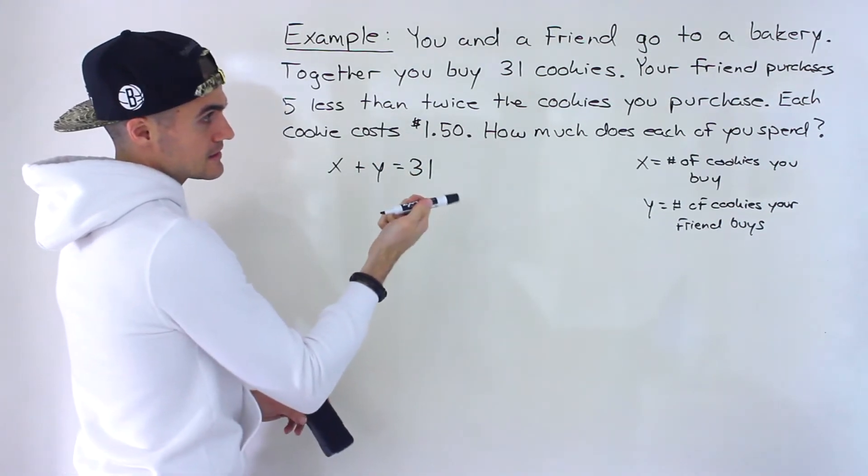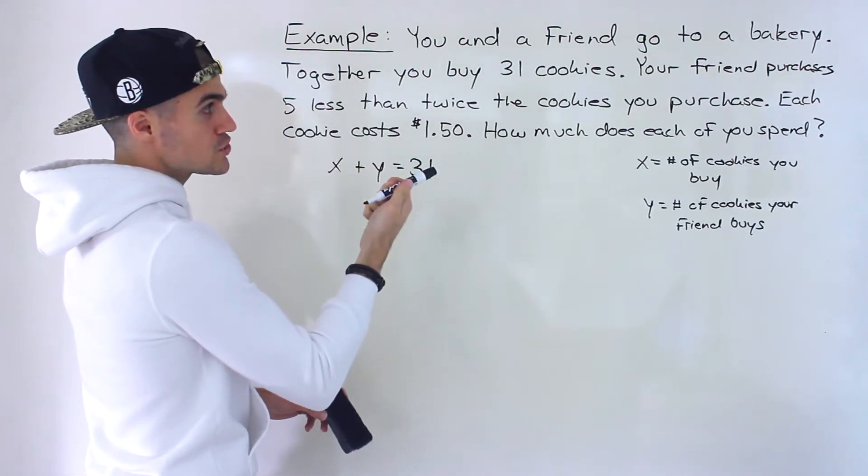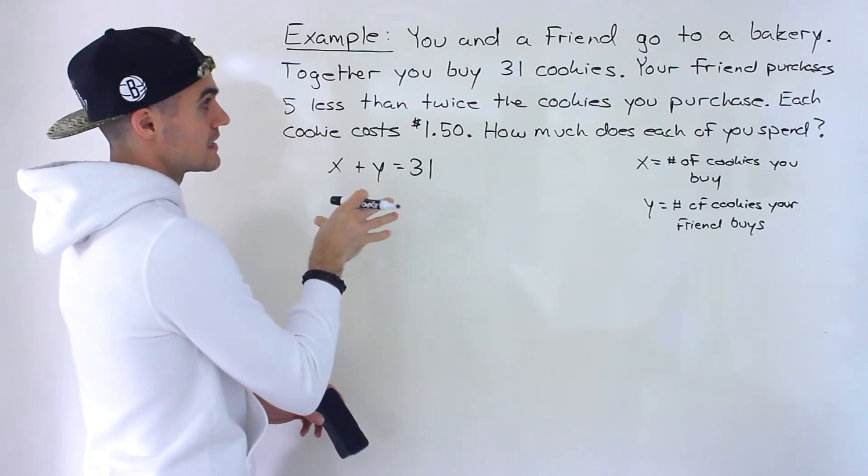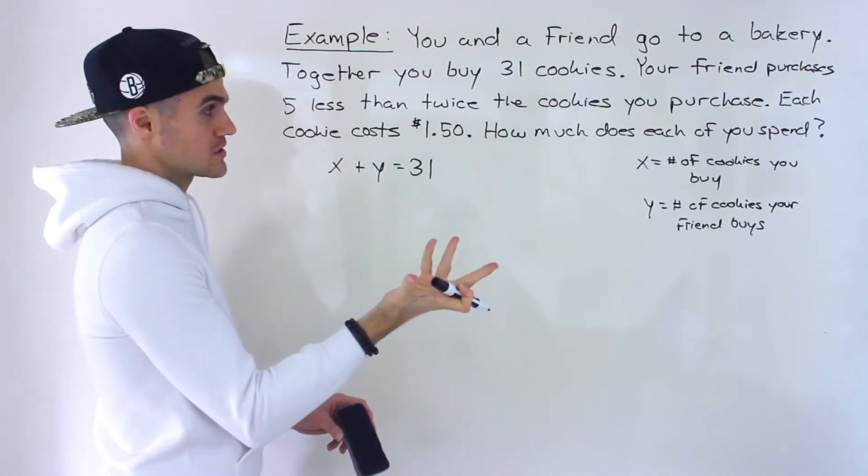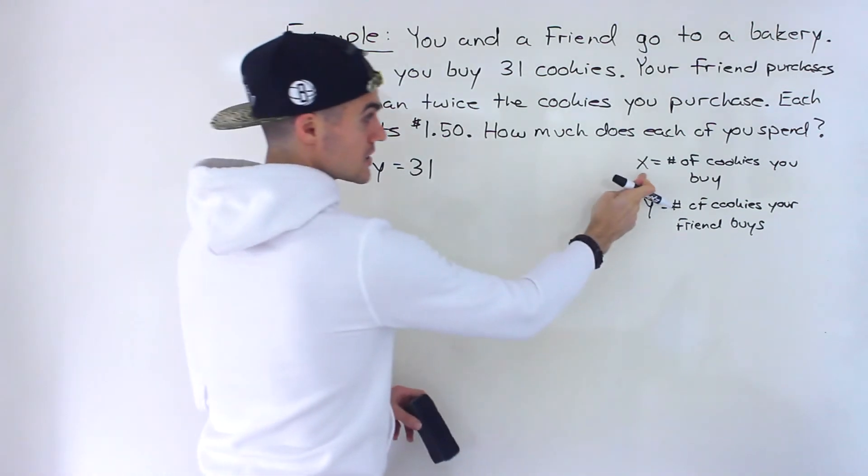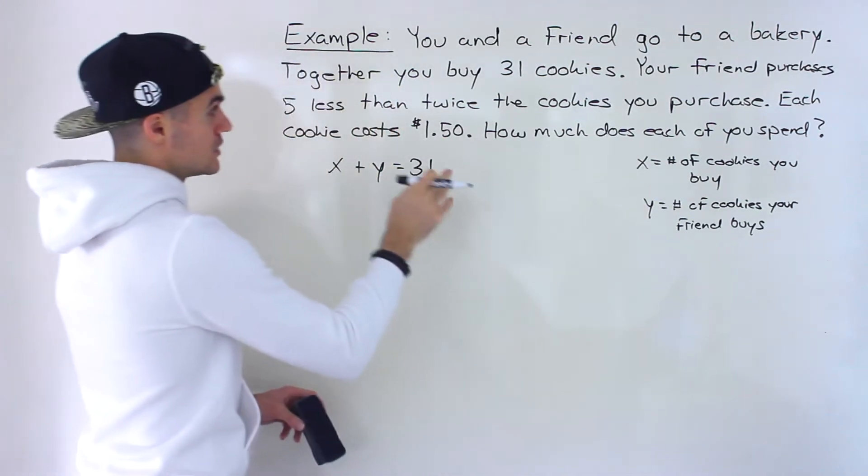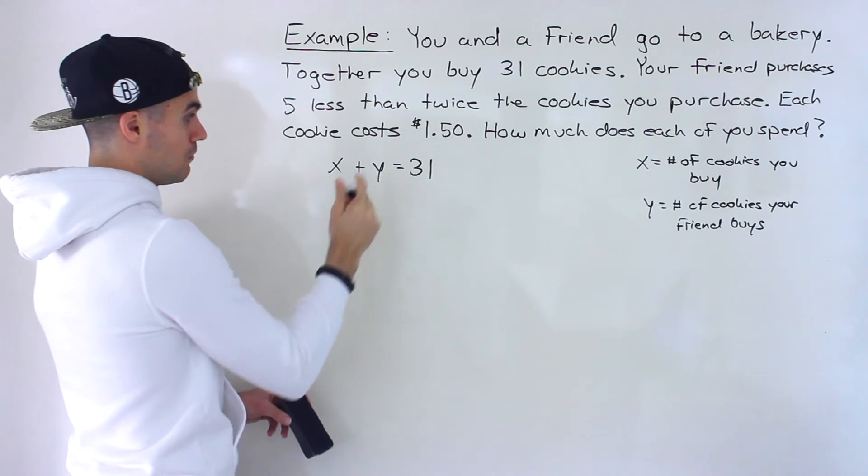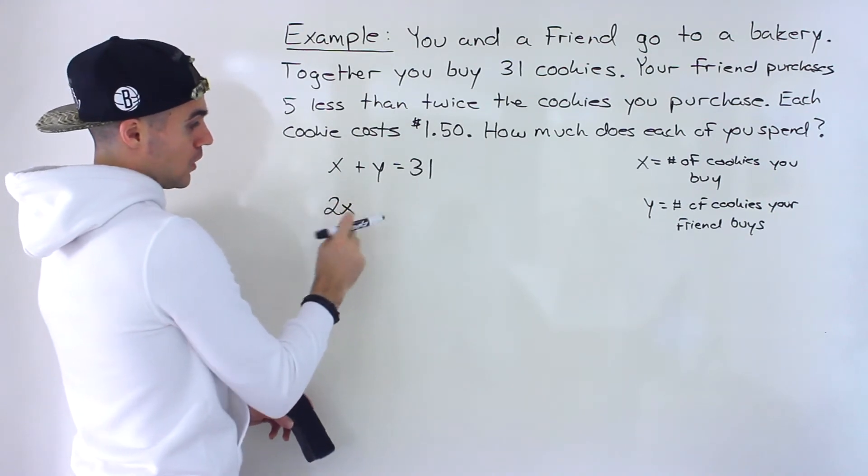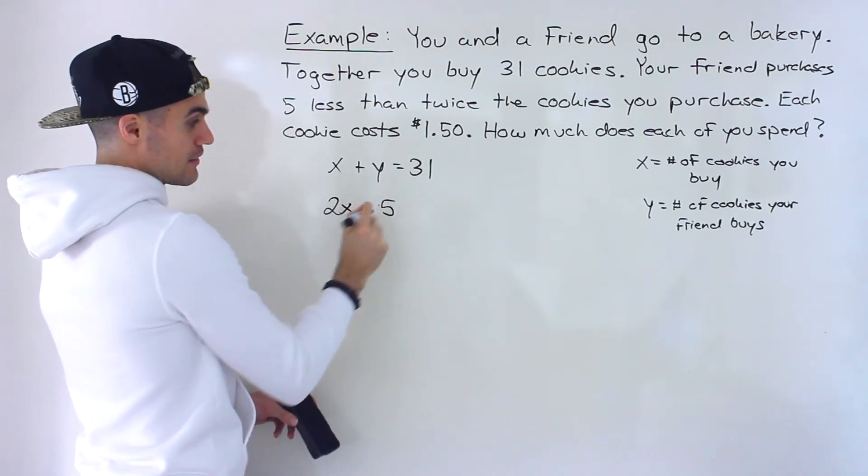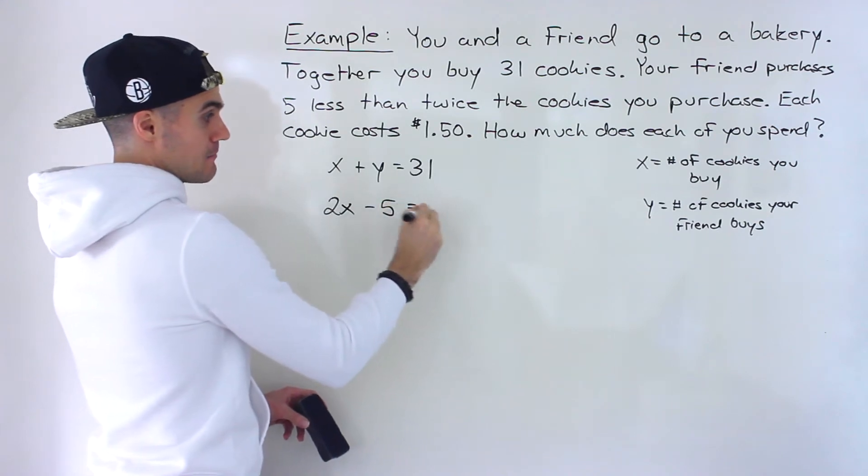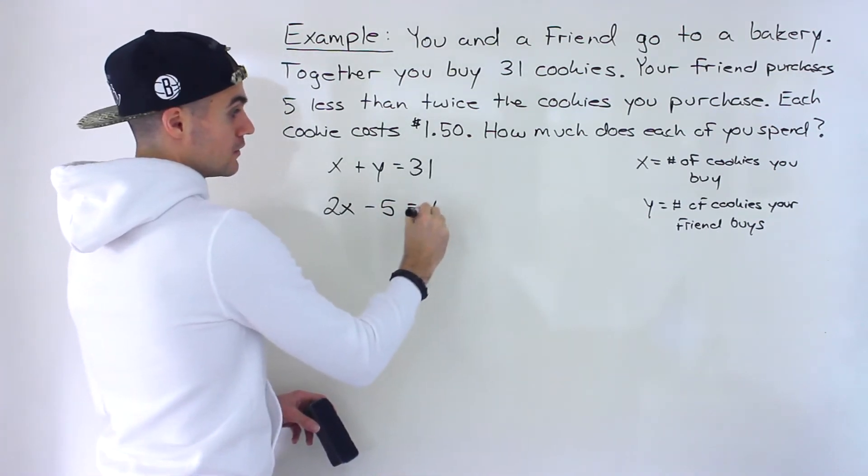And then the next sentence, you got to read it carefully. Your friend purchases five less than twice the cookies you purchase. Okay, so you purchase an x amount of cookies. So if we take that amount, multiply it by two, well, five less than that amount is the amount that your friend buys.